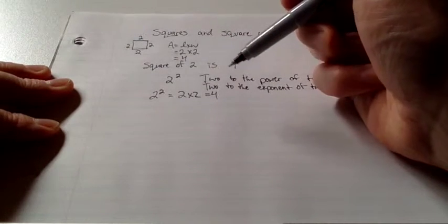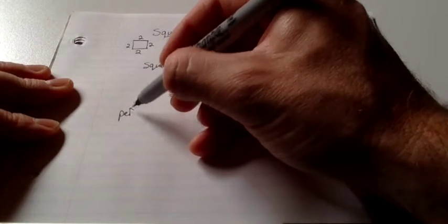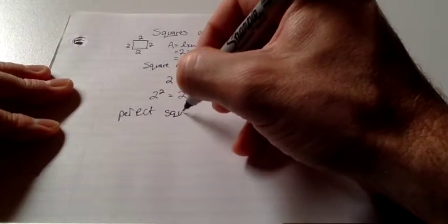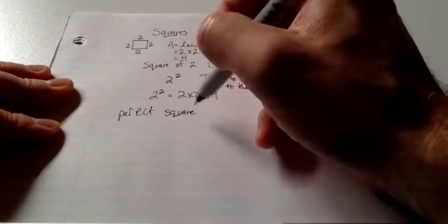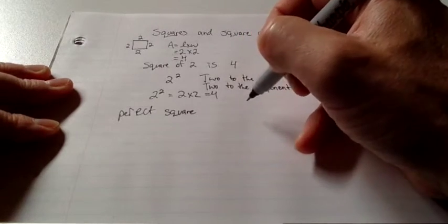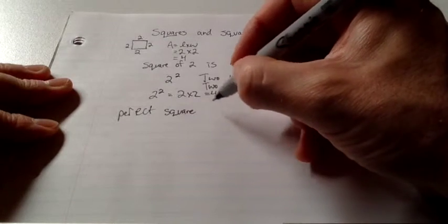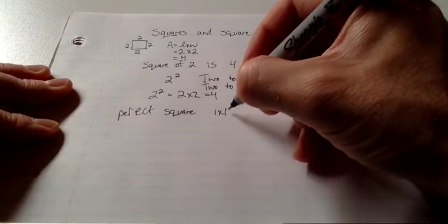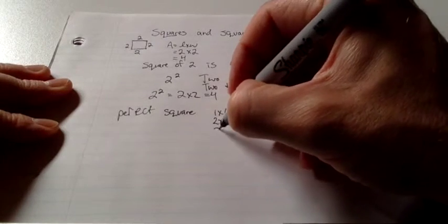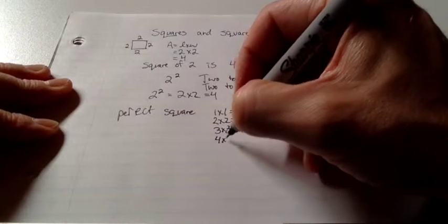Now, to take this a little bit further, and in a little bit of a different direction, here's the idea of the perfect square. Perfect square is any number where the square root of it, and we'll get to that shortly, is a whole number. So 1 times 1 is 1. 2 times 2 is 4. 3 times 3 is 9, etc.